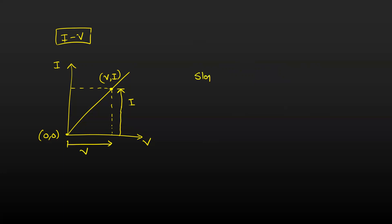So what is the slope? Slope is rise divided by run. Rise is the current and run is the voltage, so that is 1/R. For the I versus V graph, slope equals 1/R. In this graph, if the slope is larger, the resistance value is lower, and vice versa.